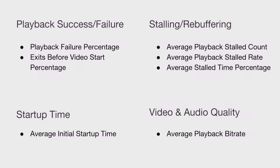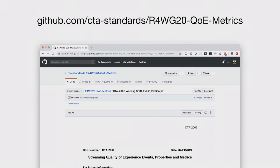To start with, we have a core set of relatively simple metrics that we're trying to get out as a V1 to build on top of. We tried to get at least one metric in each of four major categories: playback success and failure, stalling and rebuffering, startup time, and video and audio quality. You might look at this and say that's not nearly enough metrics, or this is missing your favorite metric. This is meant to be a baseline — simple to understand and simple to implement — so that any analytic system could quickly dive in and start providing feedback on this process. This is exactly the type of feedback you should be giving us as we go through this process.